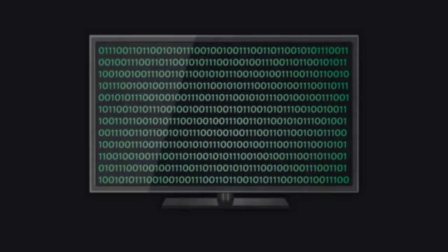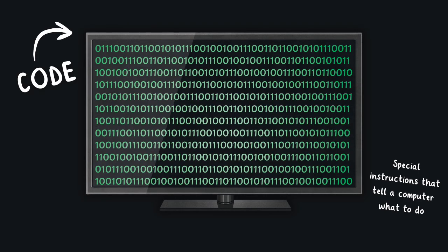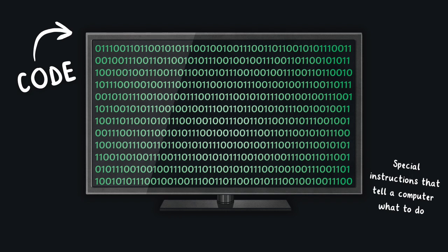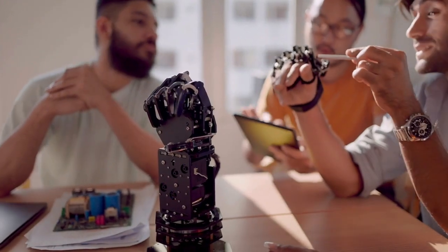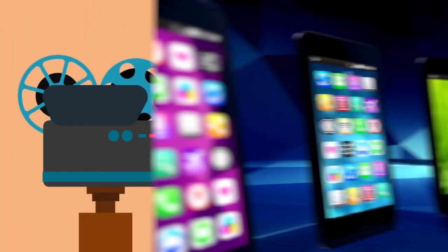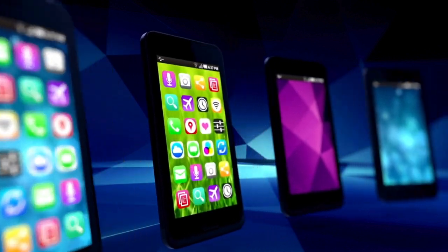At its core, computer science teaches us how to write code, special instructions that tell a computer what to do. Coding can make robots move, animations play, and apps run smoothly.